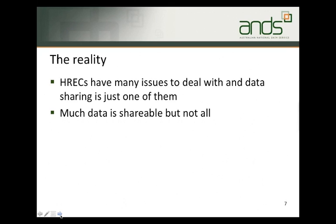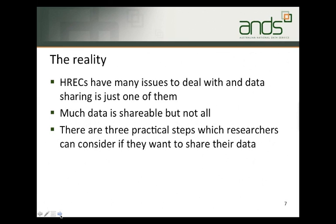Even confidential data can be shared provided that consent has been given to allow it. Examples of where a researcher might seek permission for the dissemination of confidential data might be oral history interviews with prominent people who would be only too happy to share their views — retired politicians come to mind. The kind of data which is not shareable is data which contains information unique to an individual such as genetic makeup, or data that cannot be de-identified without losing its meaning or involving huge cost. There are three practical steps which researchers can consider if they want to share their data, and planning ahead is the key.